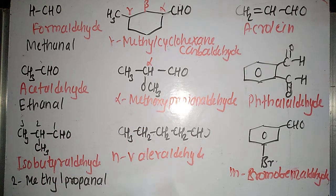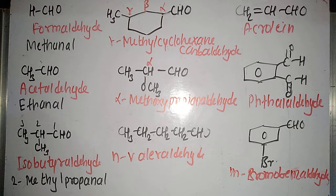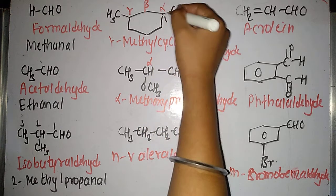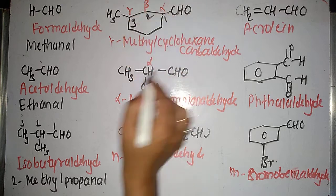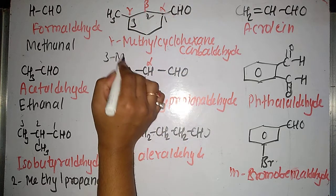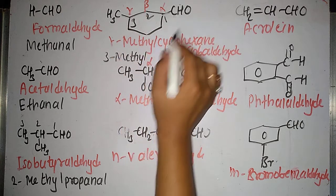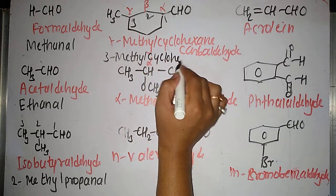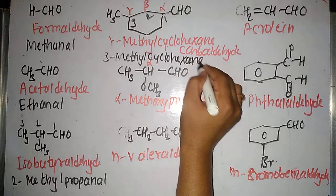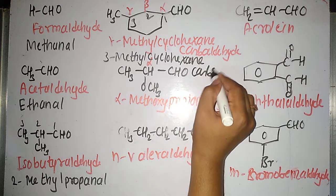In the same way, for a cyclic compound containing an aldehyde group, you number the carbon atoms present in the ring such that the carbon atom attached to the carbonyl group of the aldehyde gets number 1. So it is first, second, third — at position 3 I am having a methyl group, so I will call it 3-methyl. The ring is cyclohexane, so in IUPAC nomenclature it is called 3-methylcyclohexane carbaldehyde.